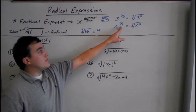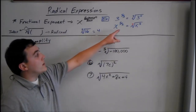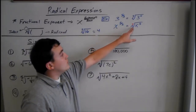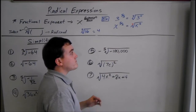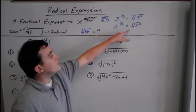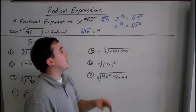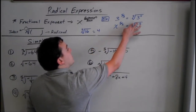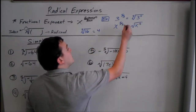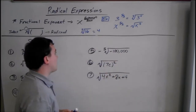Say we have x to the 5 halves. We have the square root — you don't really need to write the 2 — of x to the 5th power. So you do not need that, but you can write it.